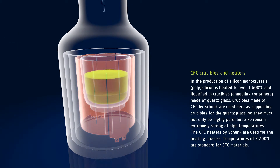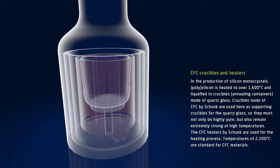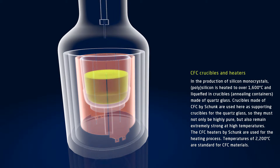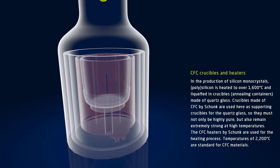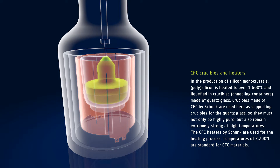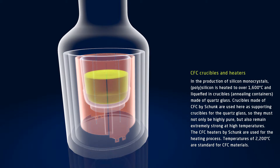In the production of silicon monocrystals, silicon is heated to over 1600 degrees Celsius and liquefied in annealing containers, also known as crucibles, made of quartz glass. At a uniform speed, large silicon monocrystals are then drawn from the molten mass. Schunk develops and produces crucibles made of carbon fiber-reinforced carbon, or CFC, which are used to support the inner crucible made of quartz glass.